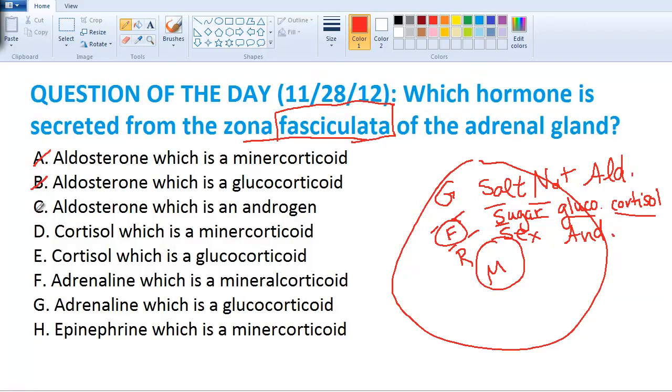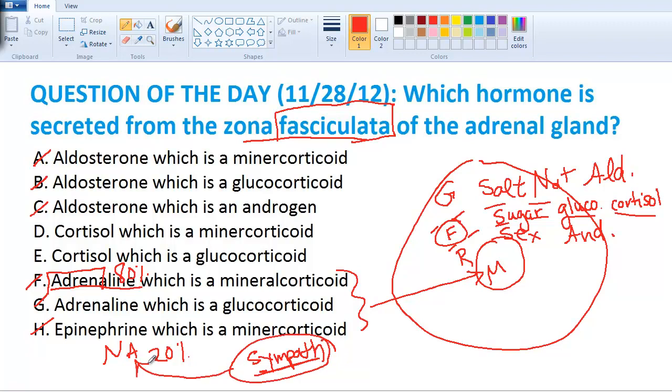So aldosterone, no. Skip all those. Cortisol, yes. Adrenaline and epi, where is that coming from? That's from the medulla. Which one's the majority? It's adrenaline. How do you remember? Because it's called the adrenal gland. So adrenaline's the majority, about 80%. What else comes from there? Noradrenaline, about 20%. In the sympathetic nervous system, the majority of your neurotransmitter is noradrenaline. In the adrenal gland, the majority is adrenaline.